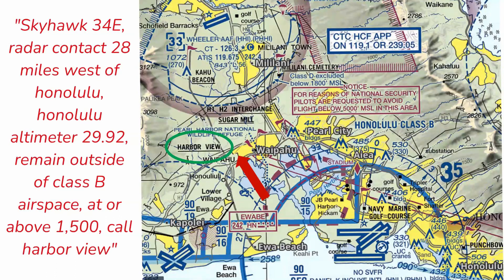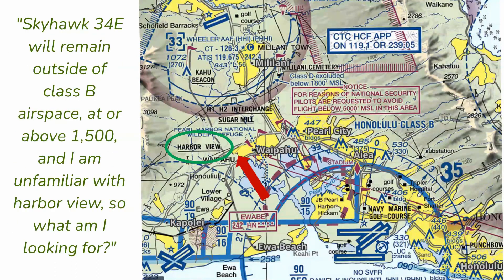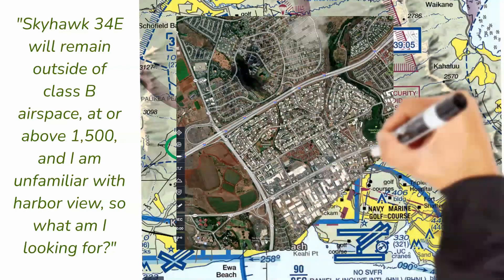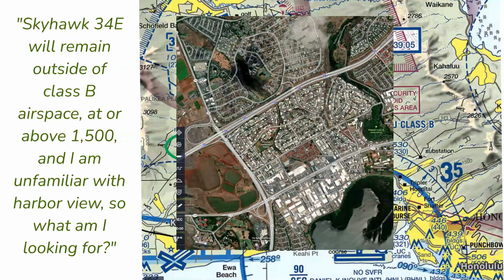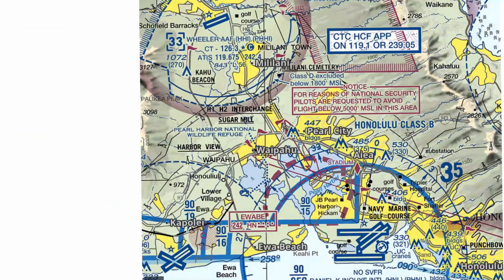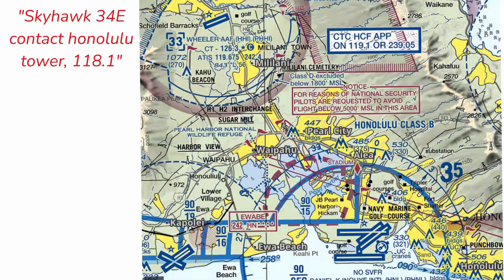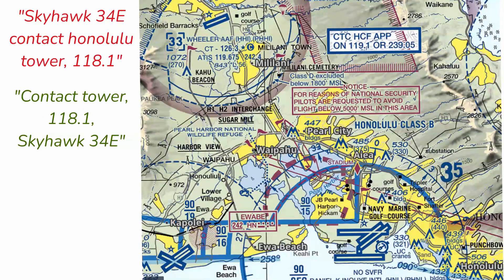In this instance, Approach told me to call Harborview. Remember the number one rule — ATC works for you. I'd never been to Honolulu, and though I knew there was a waypoint on the map I could fly to with a GPS, I wasn't familiar with what I was looking for on the ground. So I said: 'Skyhawk 34 Echo will remain outside of Class B airspace at Harborview above 1,500, and I'm unfamiliar with Harborview — what am I looking for on the ground?' He explained that Harborview was a small mall in the vicinity of a large highway intersection. Before ForeFlight, sometimes I would just ask for a heading, and they would always assist. Shortly before reaching the VFR waypoint, Approach told me to contact Honolulu Tower. Approach Control had started a flight strip on me that they handed over to Tower, so Tower already knew my intent.